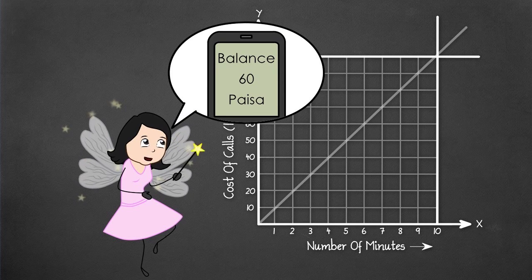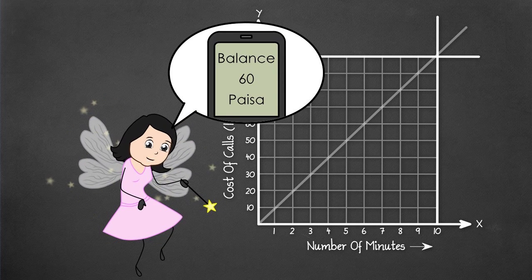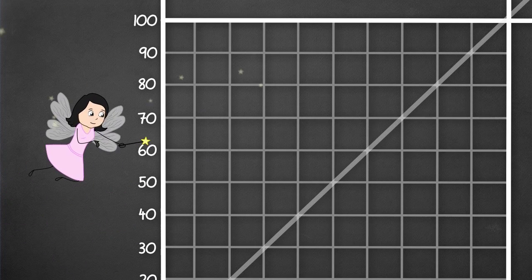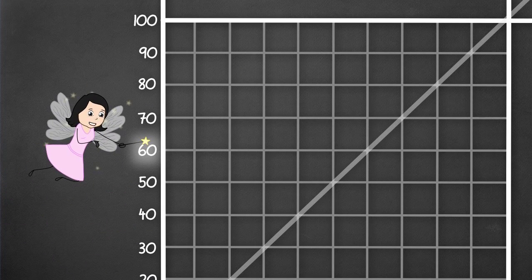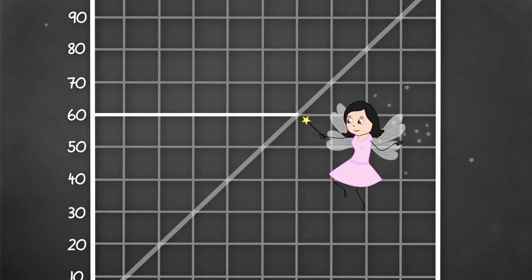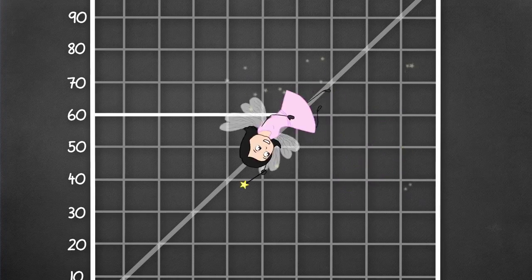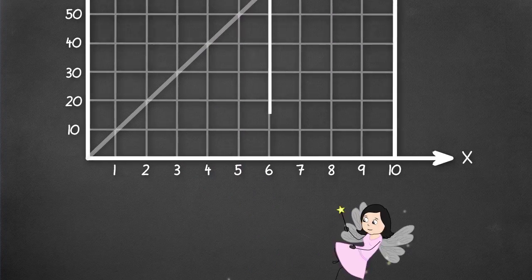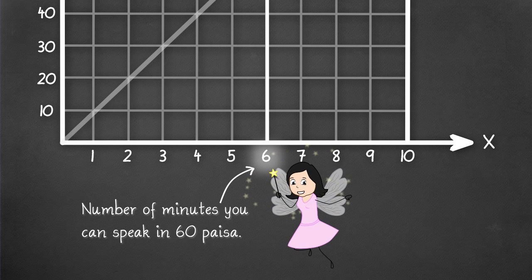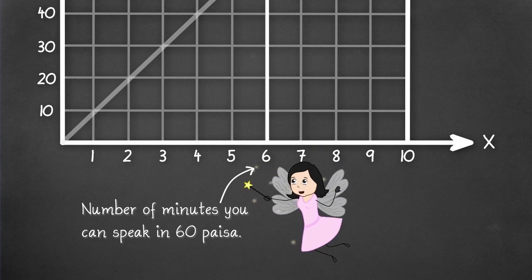Suppose you have 60 paisa balance on your phone and you want to know how many minutes you can speak. So, locate 60 paisa on this y-axis and follow the horizontal line until you meet this diagonal graph line. Now, turn right at this point and move straight towards the x-axis and you will arrive at 6. This is the number of minutes you can speak in 60 paisa.